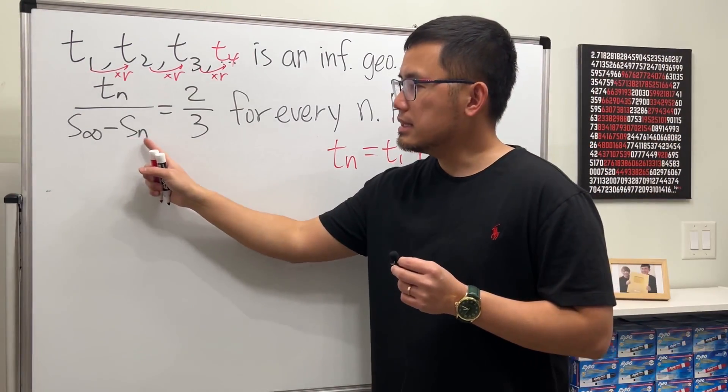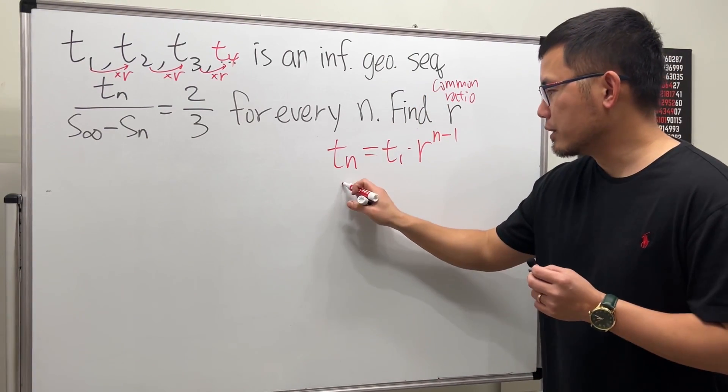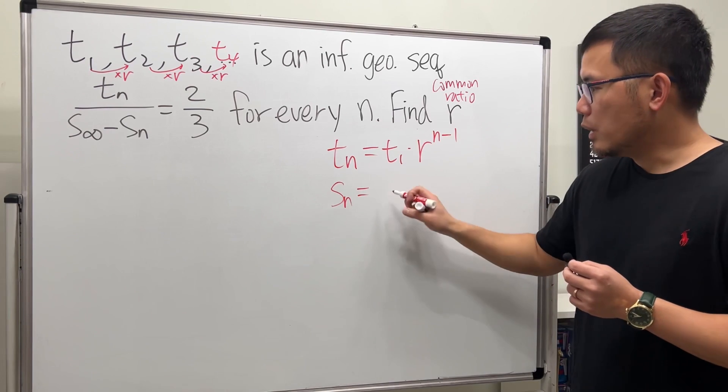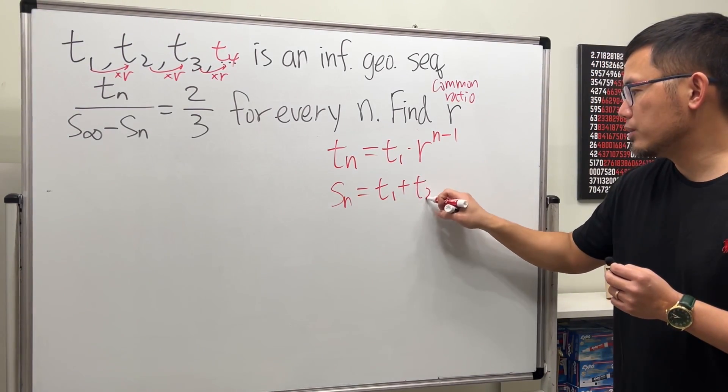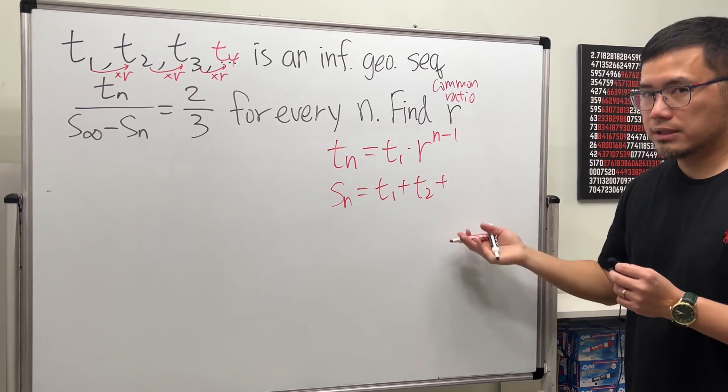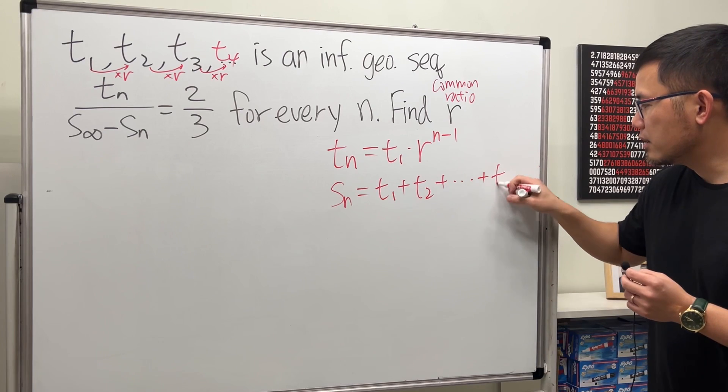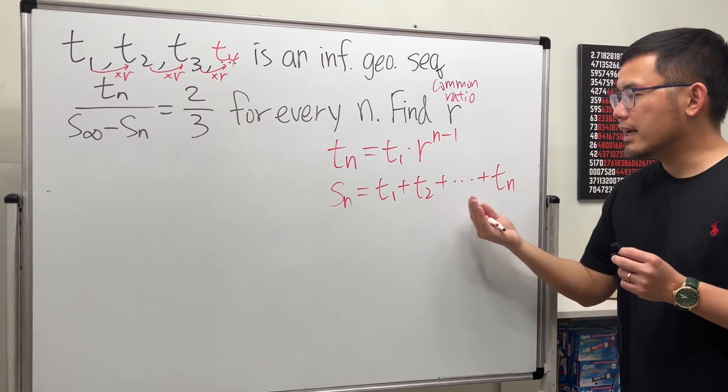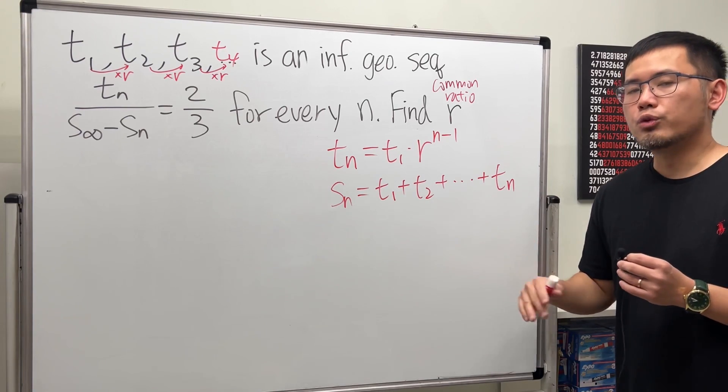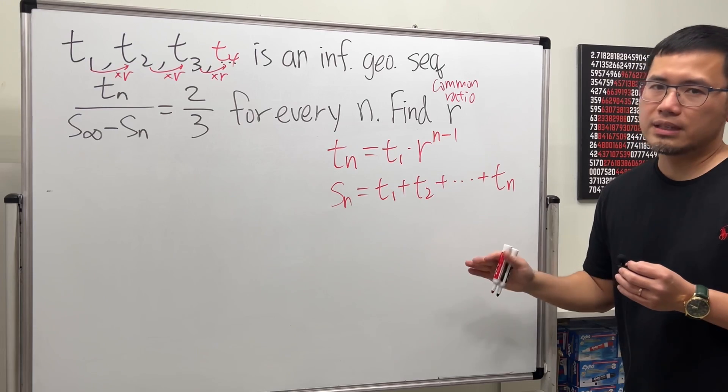Next, sn is the nth partial sum, meaning we have the following. You start with the first term, and then you are going to add it with the next term, which is t2, and then next term, which is t3, and then so on, but you are going to stop right here at tn. You only have a finite amount of terms, so you don't have to worry about what the common ratio is. You will always get a finite result.